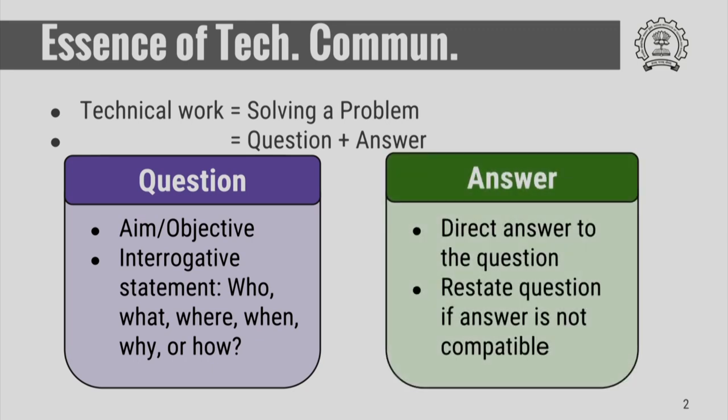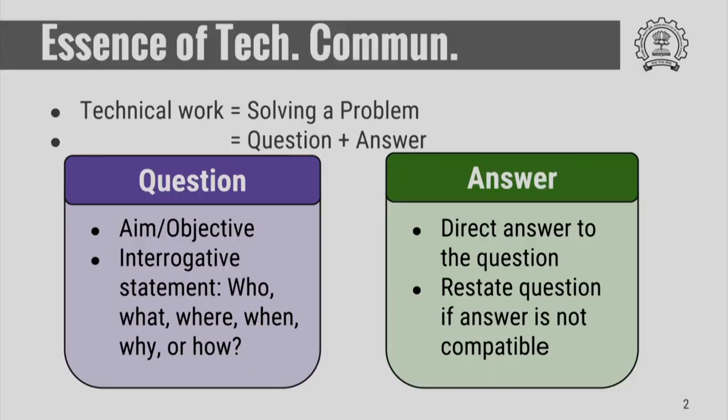The answer is essentially something which exactly corresponds to an answer to the question. It has to be a direct answer to the word. So if it is 'who,' you need to say who it is. If it is 'how,' then you need to explain how something is happening. If you find that the answer is not answering the question directly, all you need to do is restate the question. Ultimately, you need to get the question and answer compatible with each other.